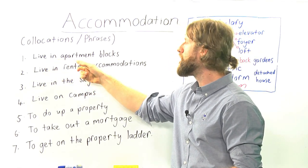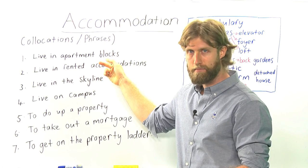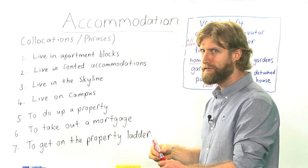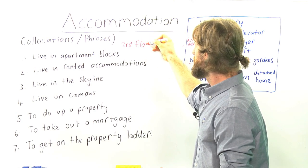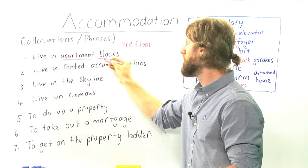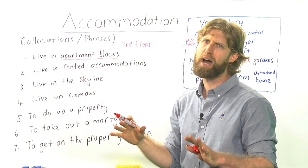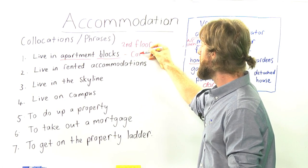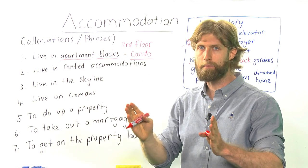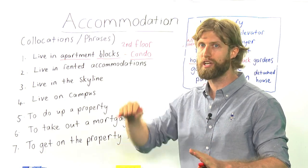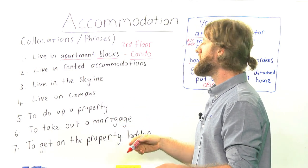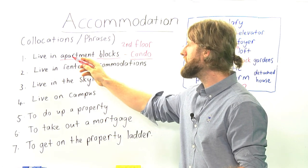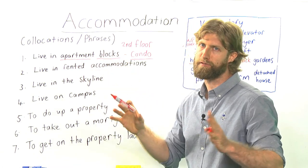Number one: live in apartment blocks. If you are living on the first or second story, you can say: I live on the second floor in an apartment in the apartment blocks. That means there will be four or five different apartments inside the same floor. However, if you are living in a condo, a condo means it is a separate apartment on its own floor — usually on top of the building. So you can say: I live in a luxurious condo on the top floor. Or: I am renting an apartment in apartment blocks, which means there are many different apartments on the same floor.